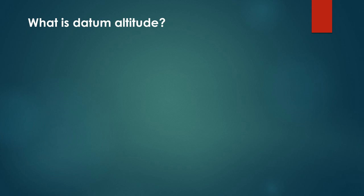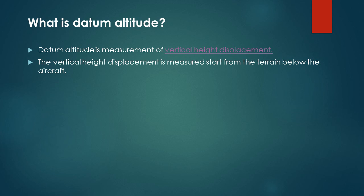What is datum altitude? Datum altitude is the measurement of vertical height displacement. So how is the vertical height displacement measured? The vertical height displacement is measured starting from the terrain below the aircraft.